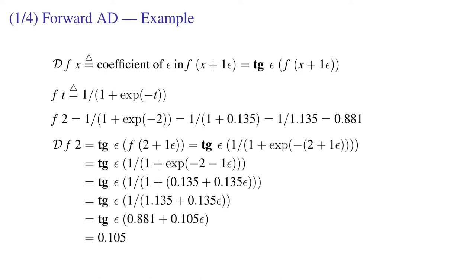Let's say f of t is 1 over 1 plus e to the minus t. We define the operator D to take the derivative of f at a point x by feeding x plus epsilon into f, extracting the tangent of the output.